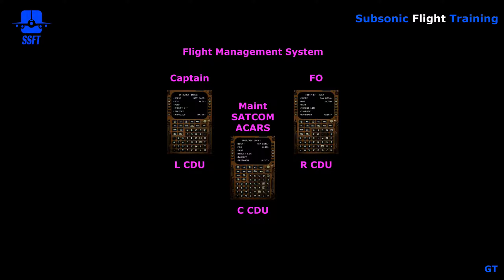Normally the left and right CDUs are used by the captain and the first officer for their interface to the flight management computers. The center CDU is usually a spare — of particular interest to maintenance. We can have satellite communications on it from the menu page, and we could display ACARS information if the airline has ACARS. On more modern aircraft, they can also be used as a spare CDU.